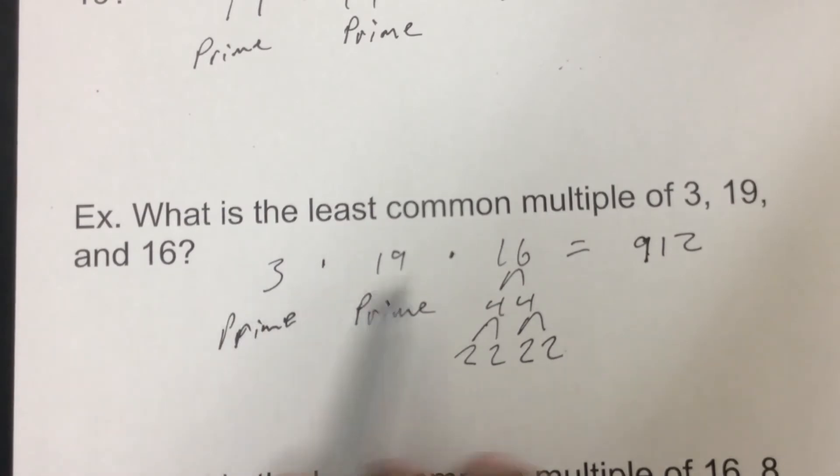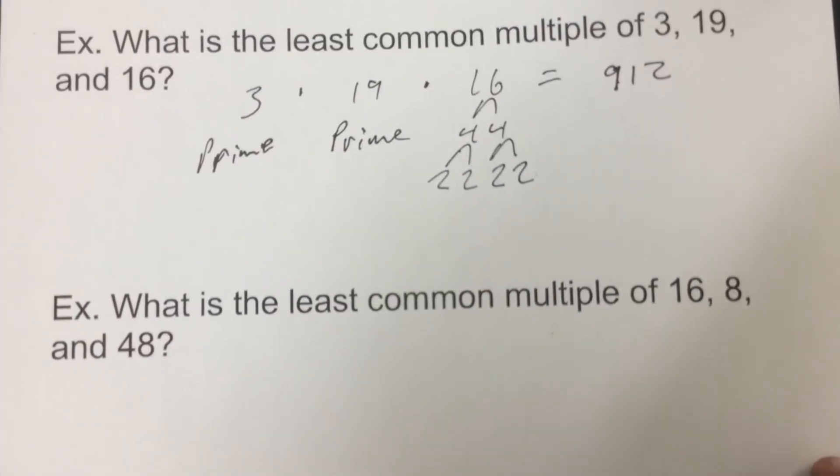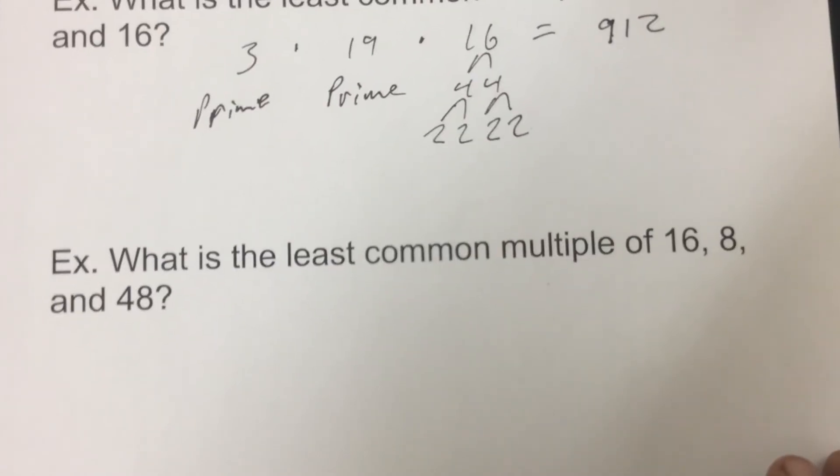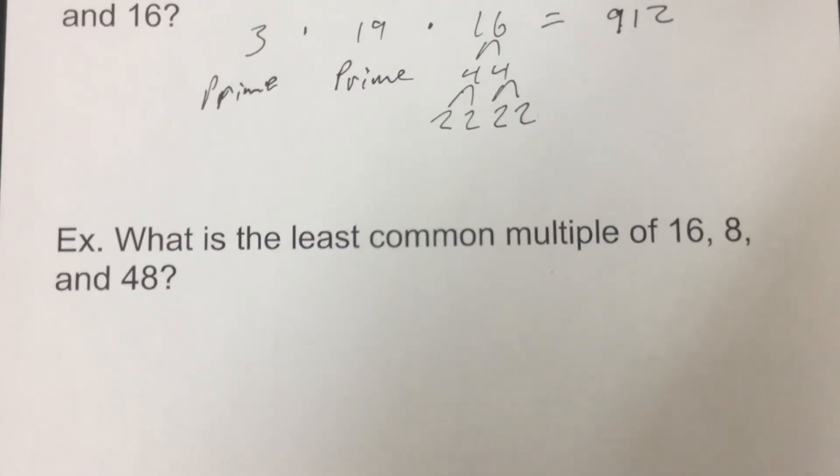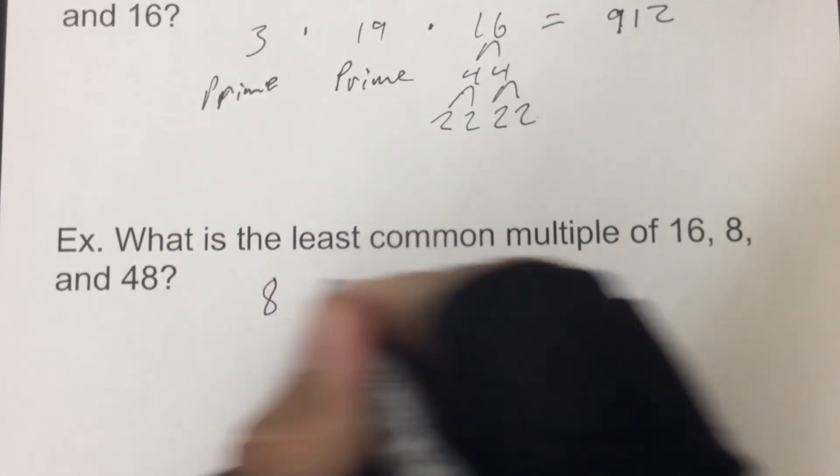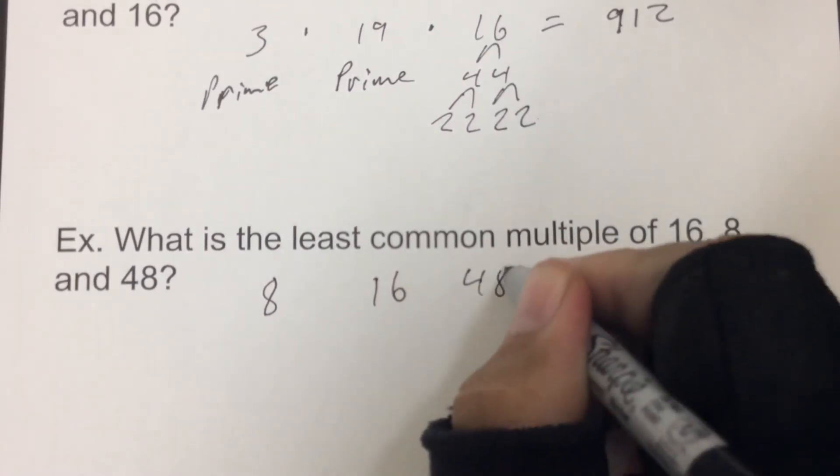Okay. So even though these are prime, you still need to check if there's a composite number and see if any of these factors are one of these other prime numbers. So then we have 16, 8, and 48.